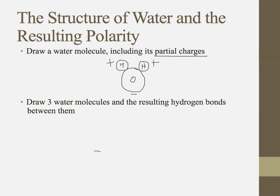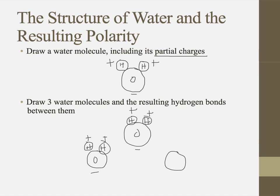If I'm drawing three water molecules — here's one, that's oxygen, hydrogen — two, and a third one. Within each water molecule, we've got some polar covalent bonding, and that results in them having positive and negative charges.